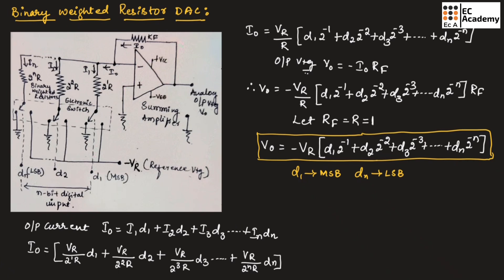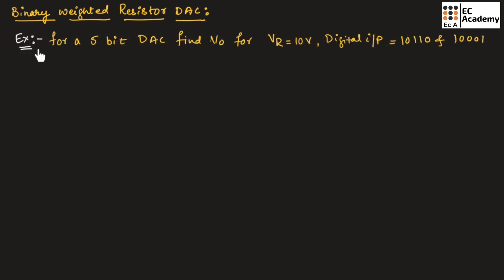But the disadvantage of binary weighted resistor DAC is that it requires many resistors if the number of bits is more. Now, let us consider an example for binary weighted resistor digital to analog converter. For a 5-bit DAC, we need to find the output voltage for a reference voltage of 10 volts, where the digital inputs are given as 10110 and 10001. For these two digital inputs, we need to find the equivalent analog signal.